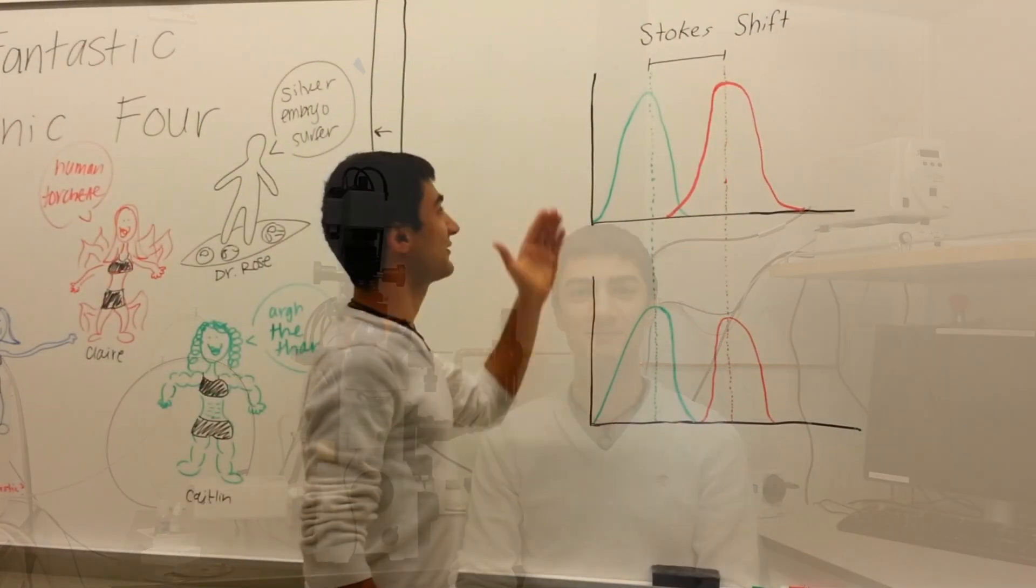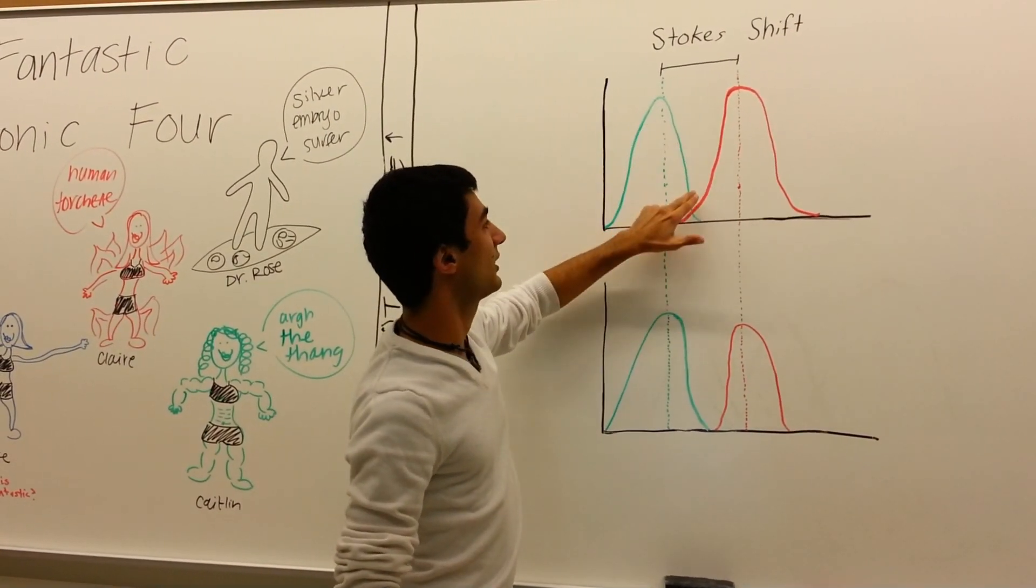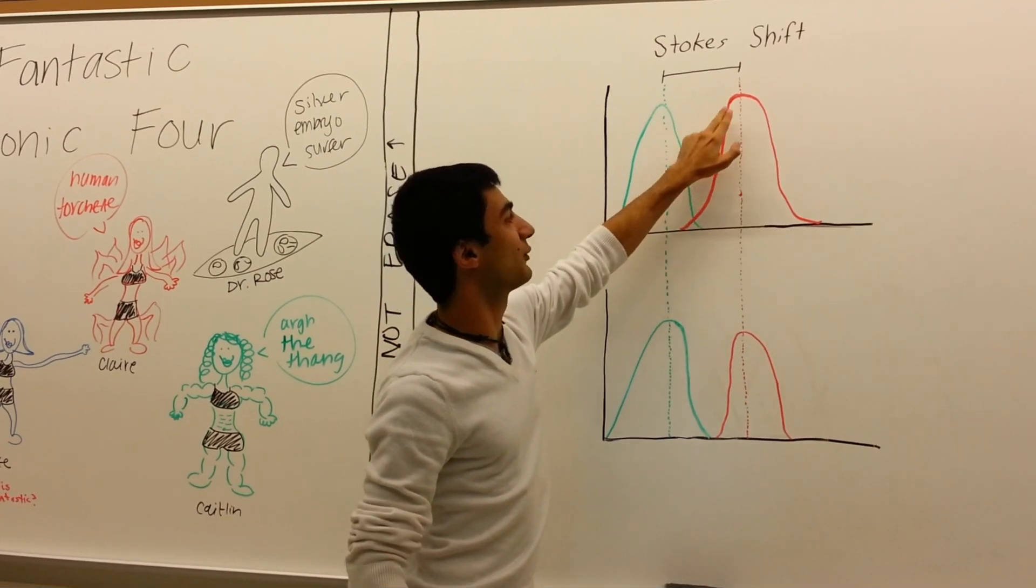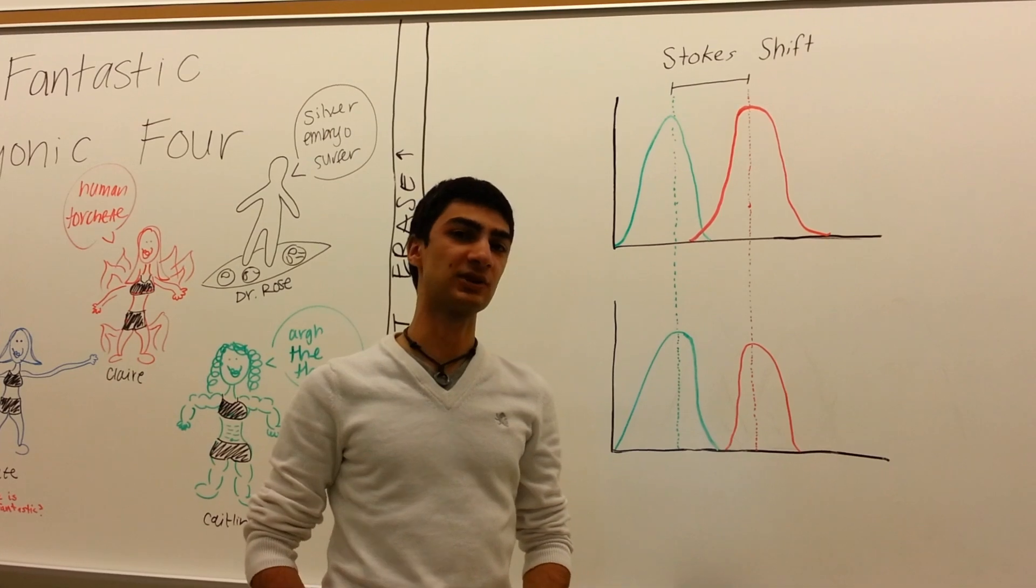Today we are going to talk about fluorescence microscopy. Fluorescence is the property of molecules to absorb and emit light at a certain wavelength. This figure illustrates that a fluorophore can absorb one wavelength of light and then emit at another wavelength. The difference between the wavelengths is known as the Stokes shift.